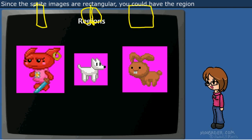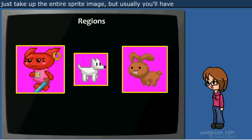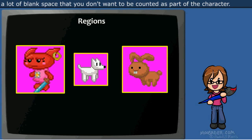Since the sprite image is rectangular, you could have the region just take up the entire sprite image, but usually you'll have a lot of blank space that you don't want to be counted as part of the character.